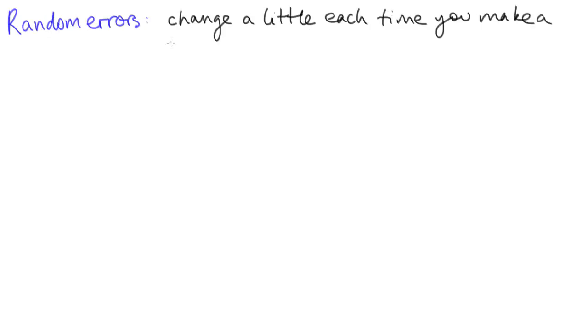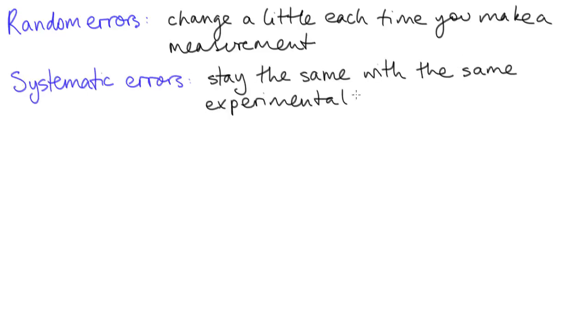Random errors are due to things that change a bit each time you make the measurement, whereas systematic errors remain the same each time you repeat an experiment.